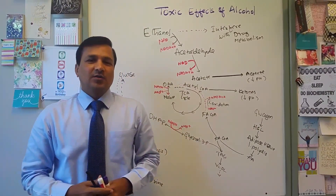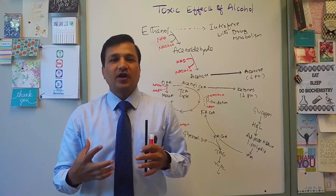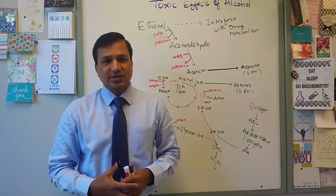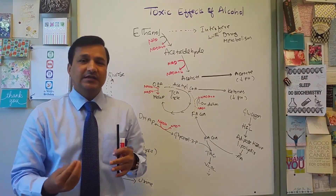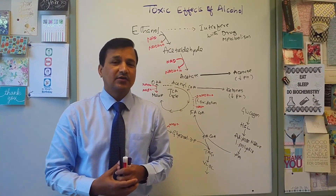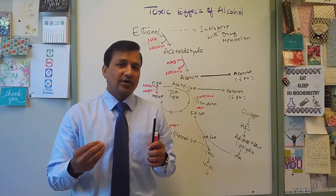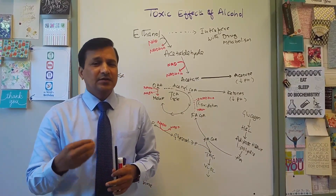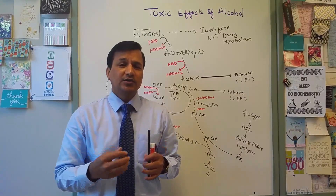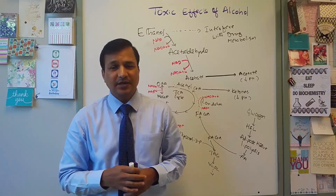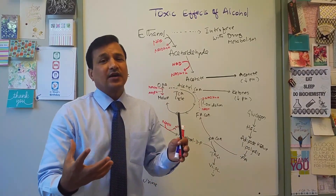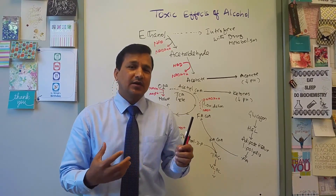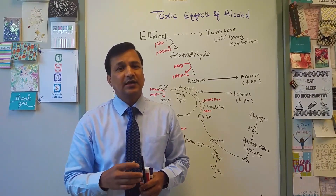This video explains the toxic effects of alcohol. In a chronic alcoholic, there are a variety of metabolic changes giving rise to different clinical signs and symptoms, especially in laboratory findings. Chronic alcoholics can get into hypoglycemia or hyperglycemia, ketoacidosis, lactic acidosis, hyperuricemia, and hyperlipidemia. I'm going to explain the biochemical mechanisms behind all these laboratory findings seen in chronic alcoholics.